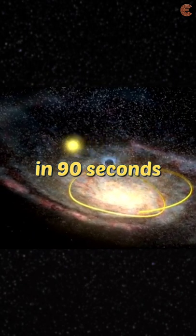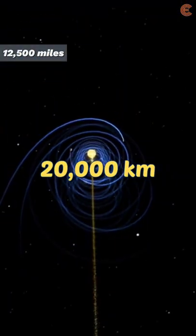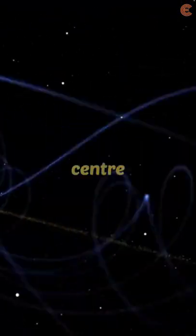For example, in 90 seconds, we all move some 20,000 km in orbit around the galaxy's center.